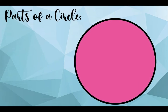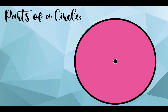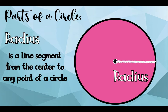Let's have this one. This is a circle. When you see a point at the middle of the circle, this is what we call the center. While this one, it is what we call the radius. Radius is a line segment from the center to any point of a circle.